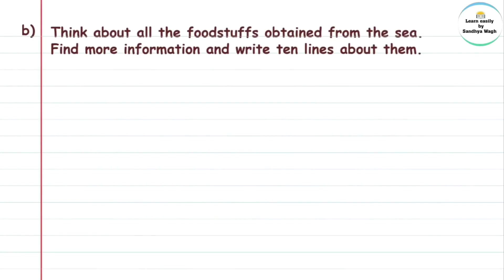Next question: Think about all the foodstuffs obtained from the sea. Foodstuffs means unnathar — food items — and obtained means milalele. Sea means samudra. Find more information and write 10 lines about them.